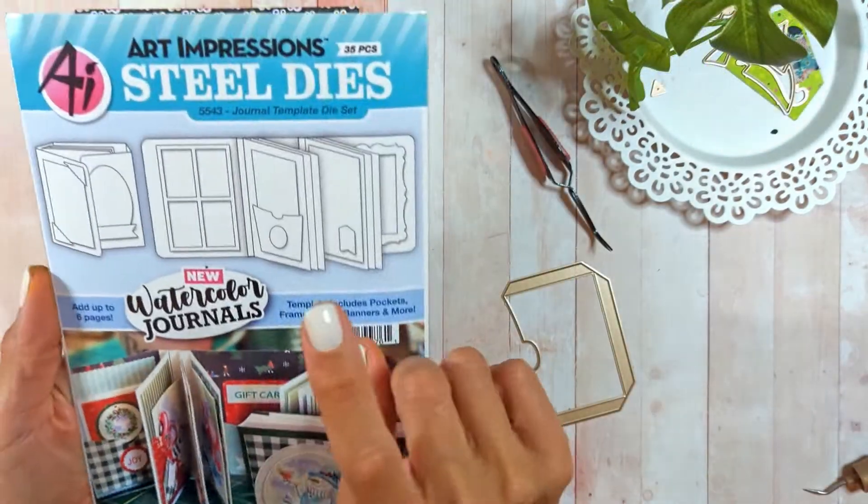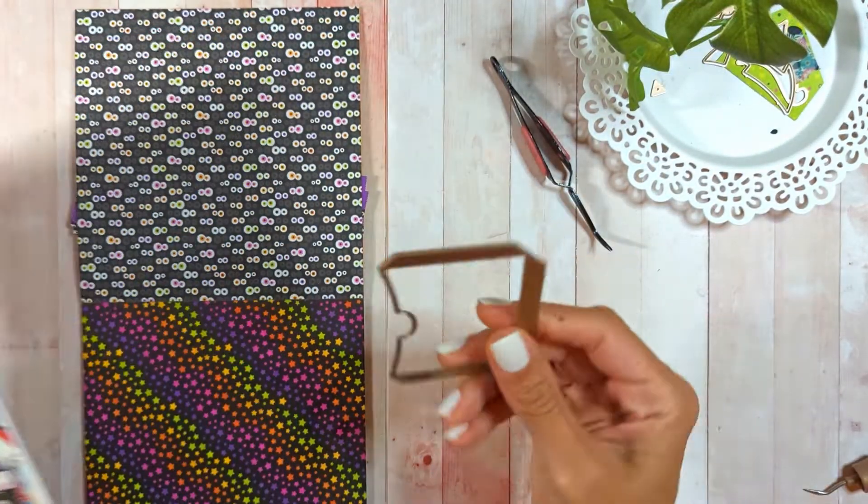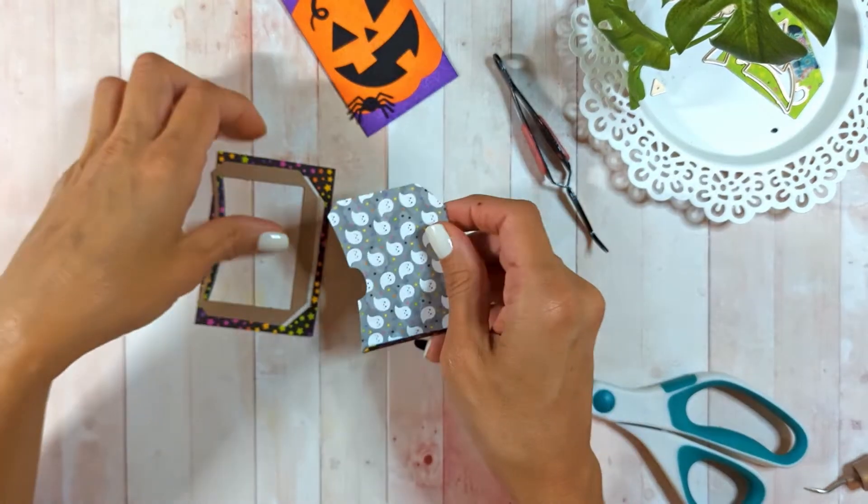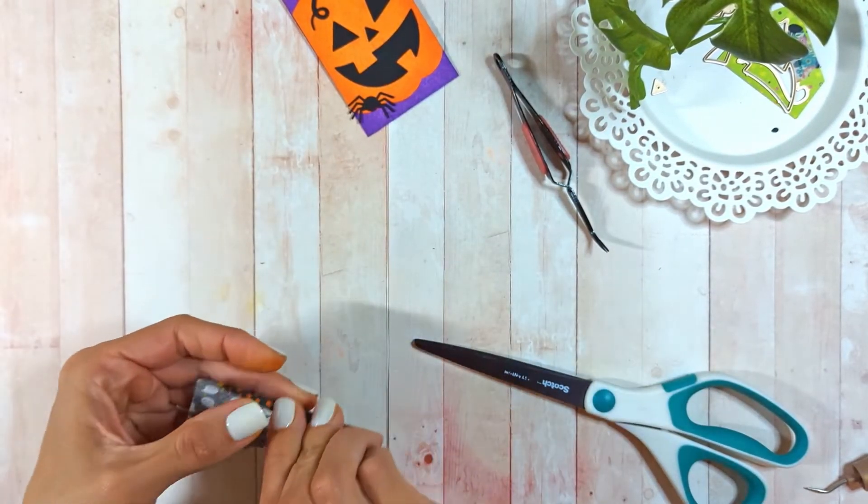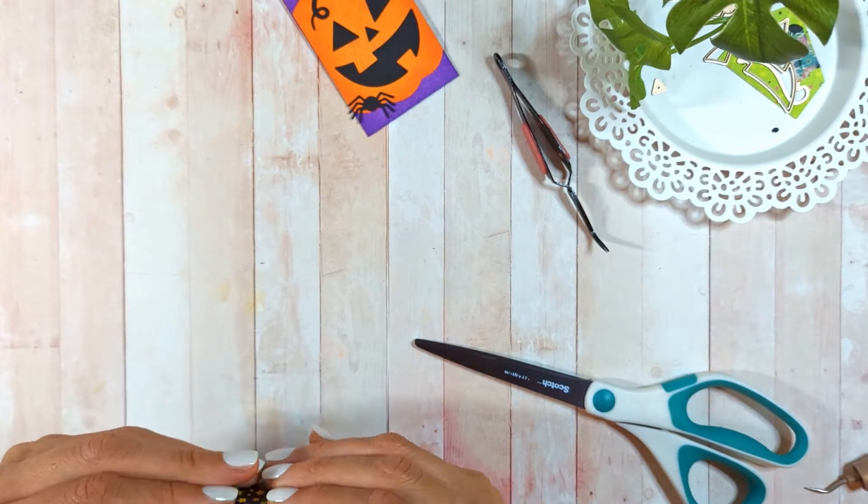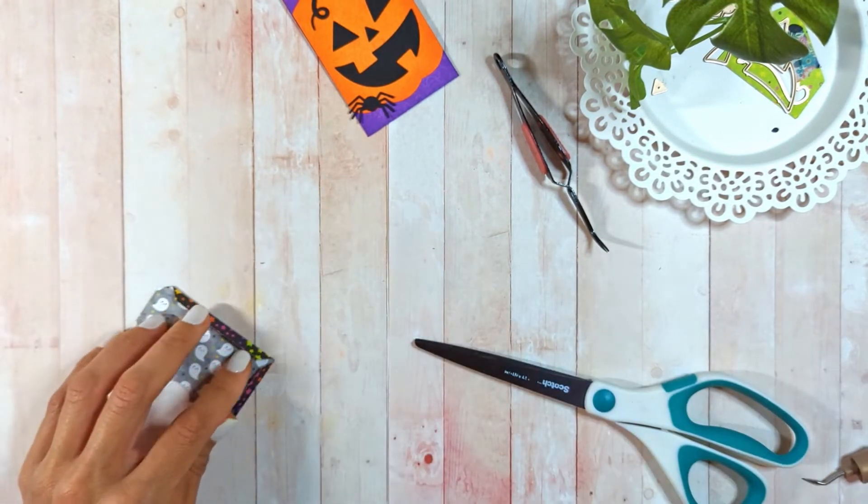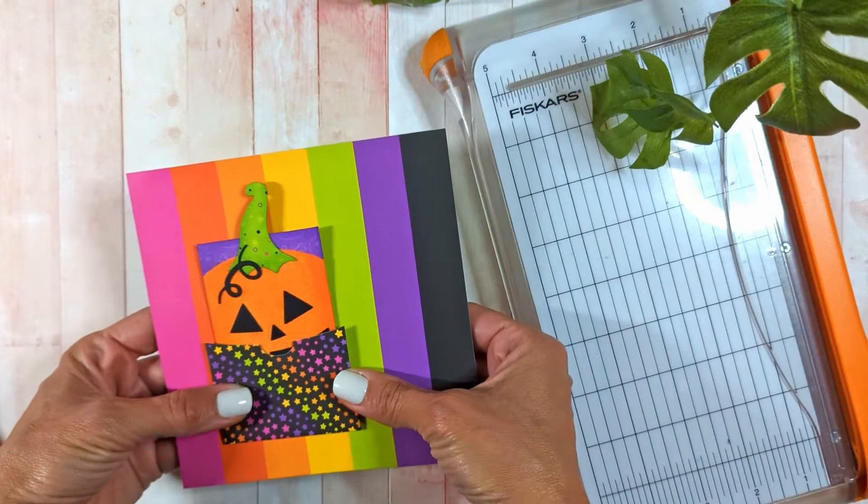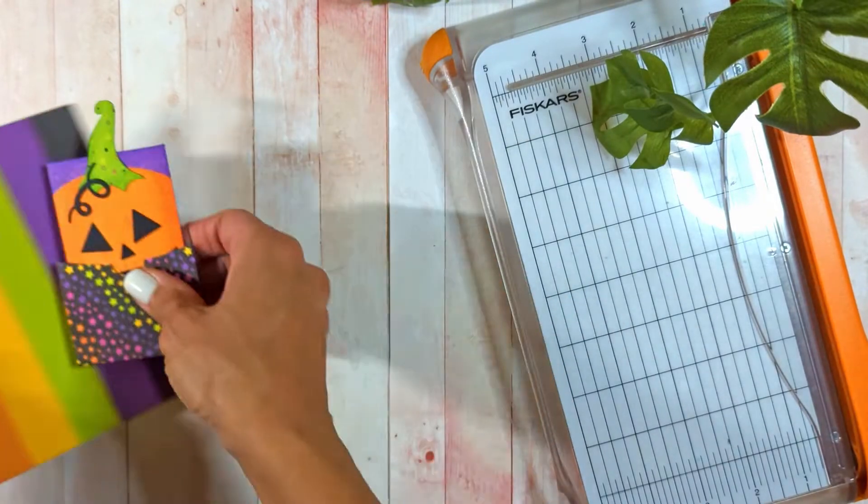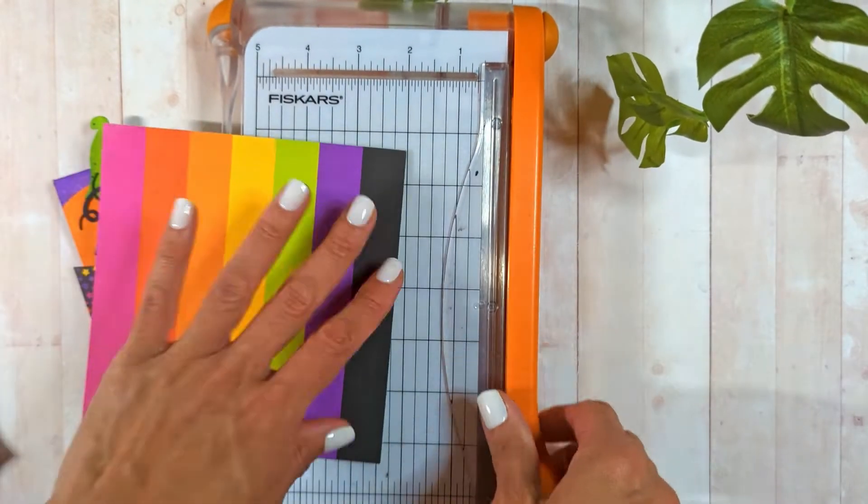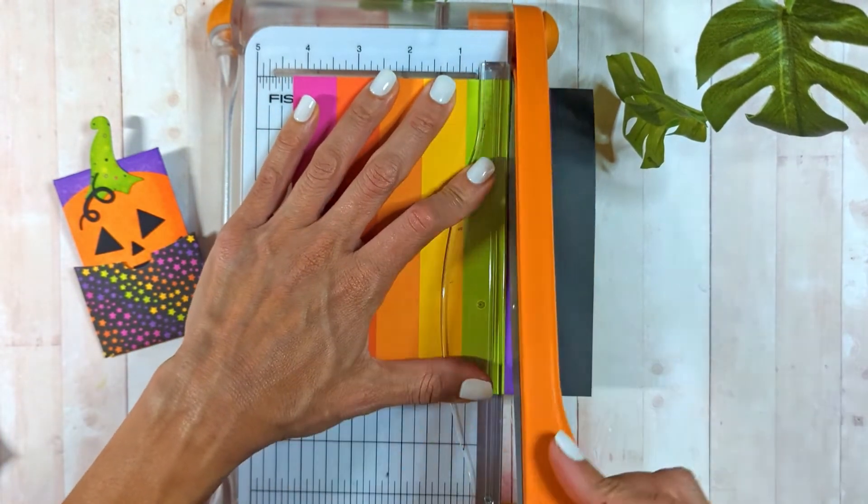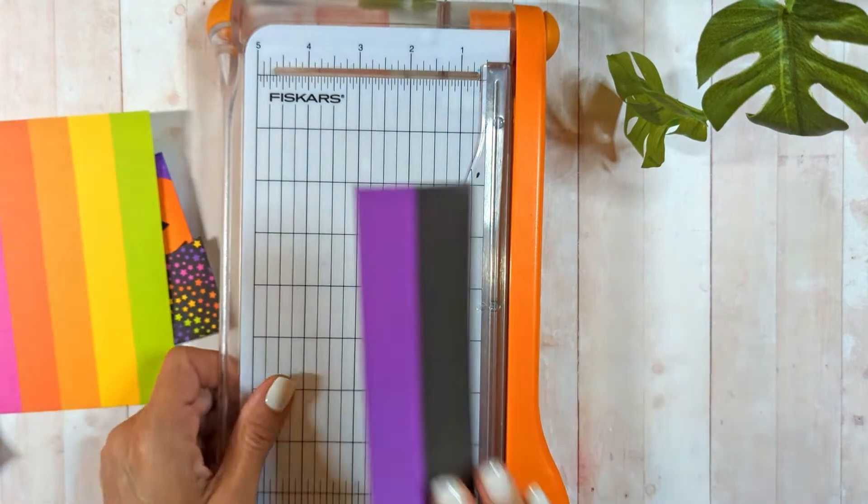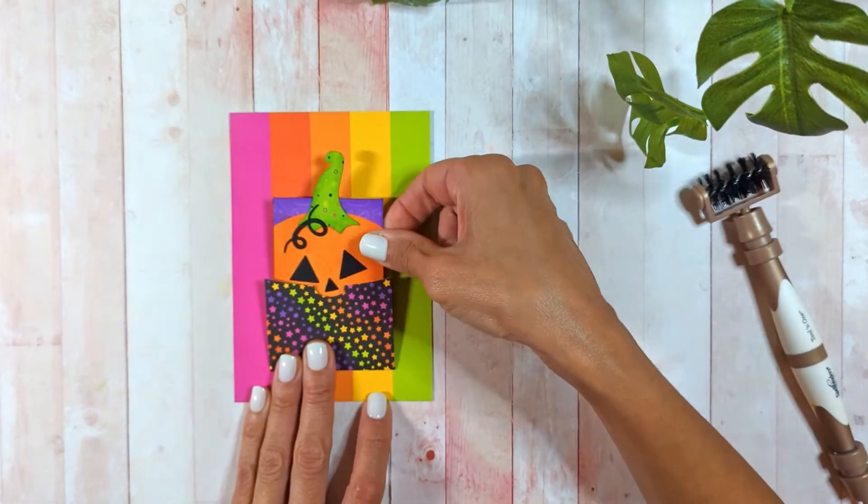I'm going to create the pocket using the journal template from Art Impressions, cutting it from this beautiful pattern paper that has lovely stars. Because they're the same paper collection, the star colors match with my pumpkin and envelope. I chose these colors from the 6x6 paper collection to create the background where I can add my pocket.